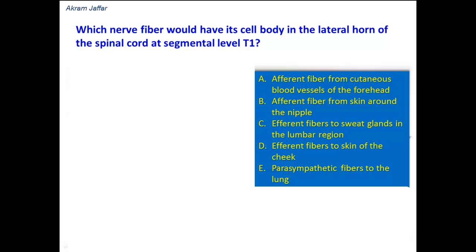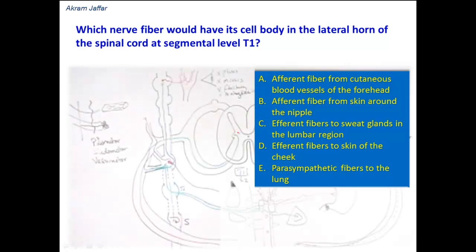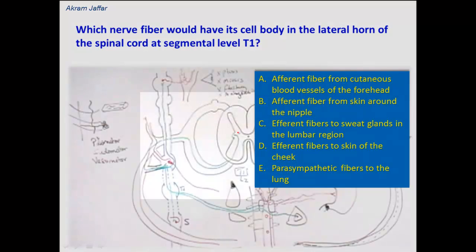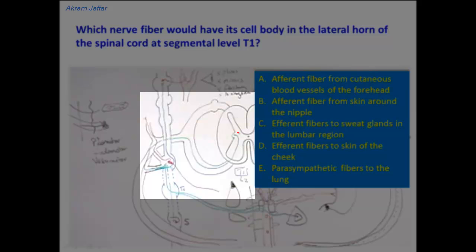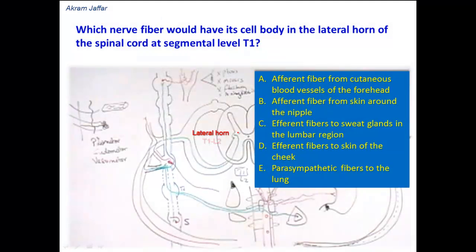Which nerve fiber would have its cell body in the lateral horn of the spinal cord at segmental level T1? The cell bodies in the lateral horn of the spinal cord are related to preganglionic sympathetic fibers. This lateral horn is a feature of spinal cord segments T1 to L2, which represent the sympathetic outflow from the central nervous system.